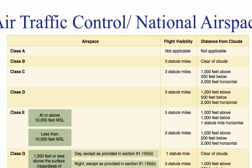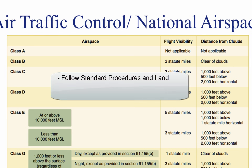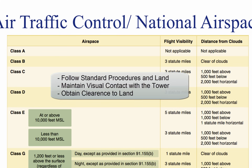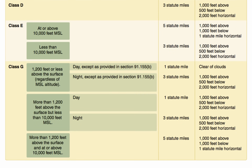If the aircraft radios fail at any time under VFR flight, the pilot should follow standard procedures and land if weather conditions are above minimums, maintain visual contact with the tower, and obtain clearance to land. Class E and G both have their own special minimums for different circumstances.